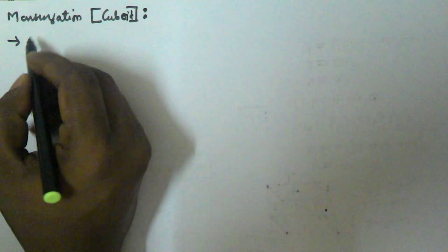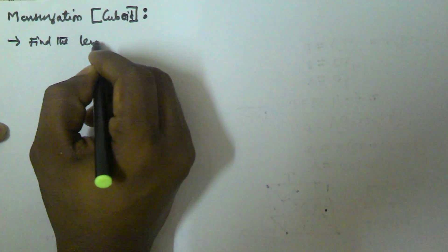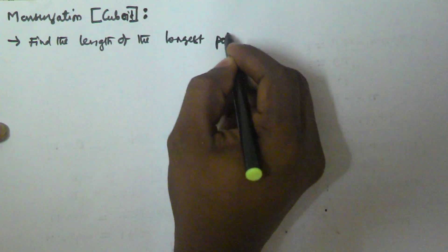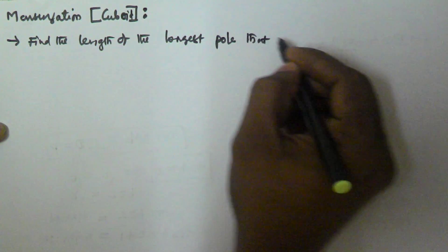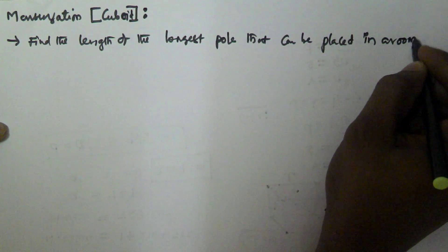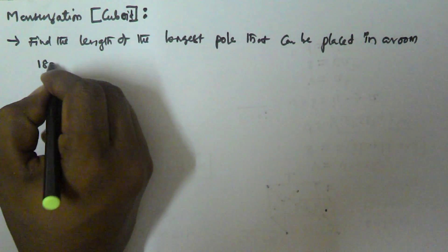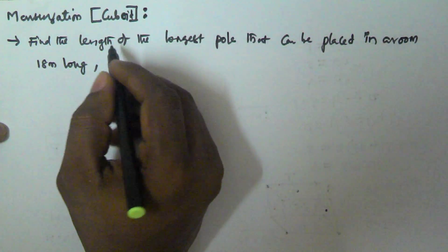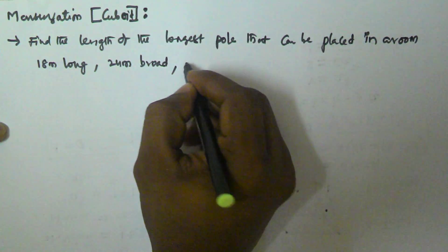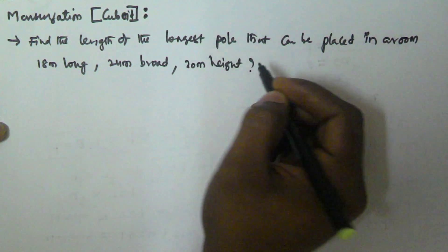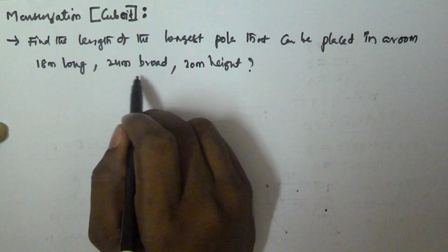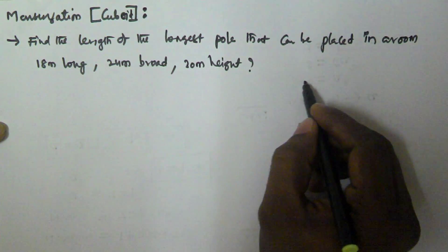So find the length of the longest pool that can be placed in a room of 18 meter long, 24 meter broad, and 30 meter height. So we take the room like this.